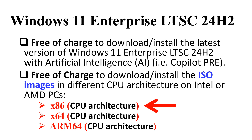If you use an old computer — an old PC or very old personal computer — most likely your CPU architecture should be x86. So most likely you should choose the x86 CPU architecture ISO image.